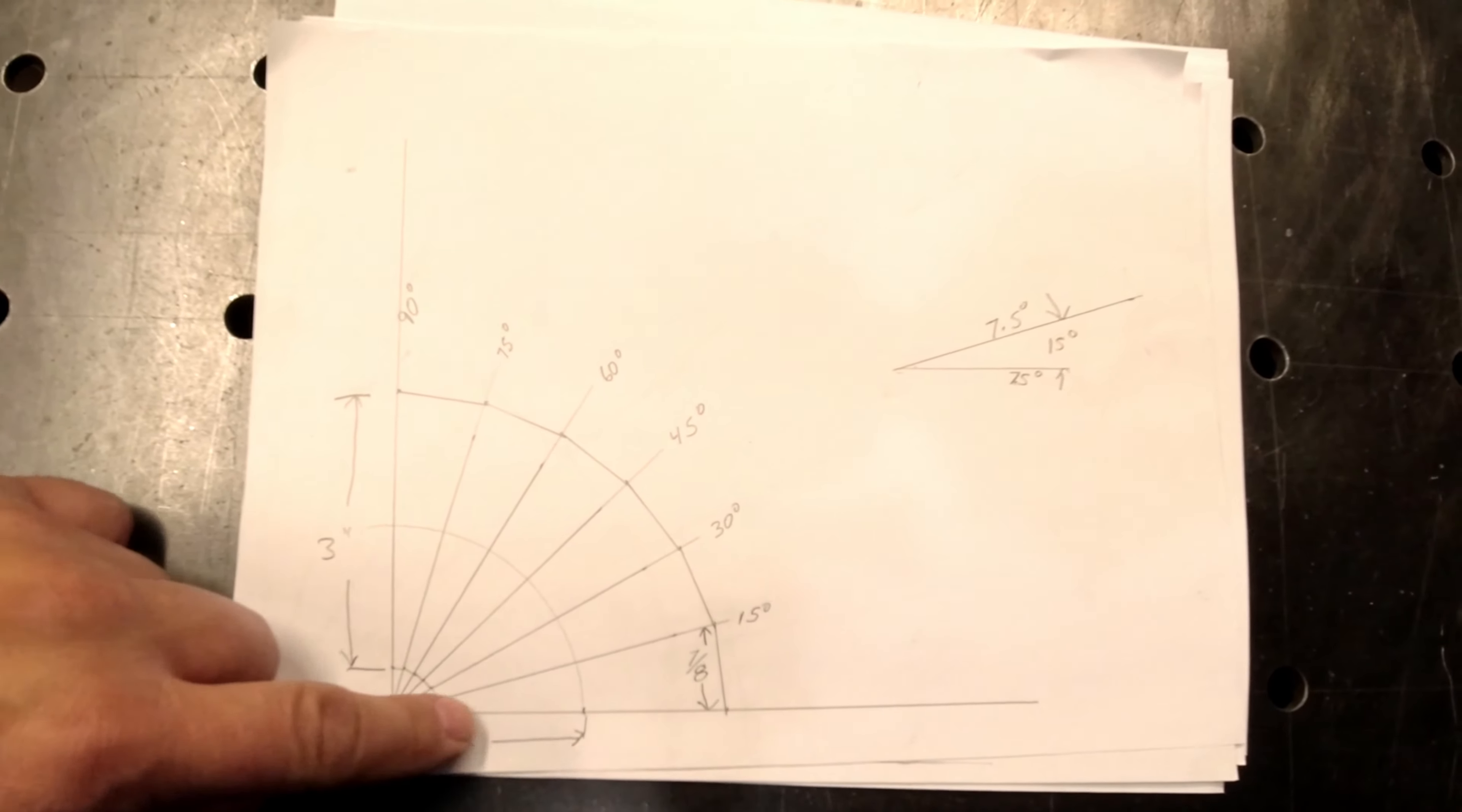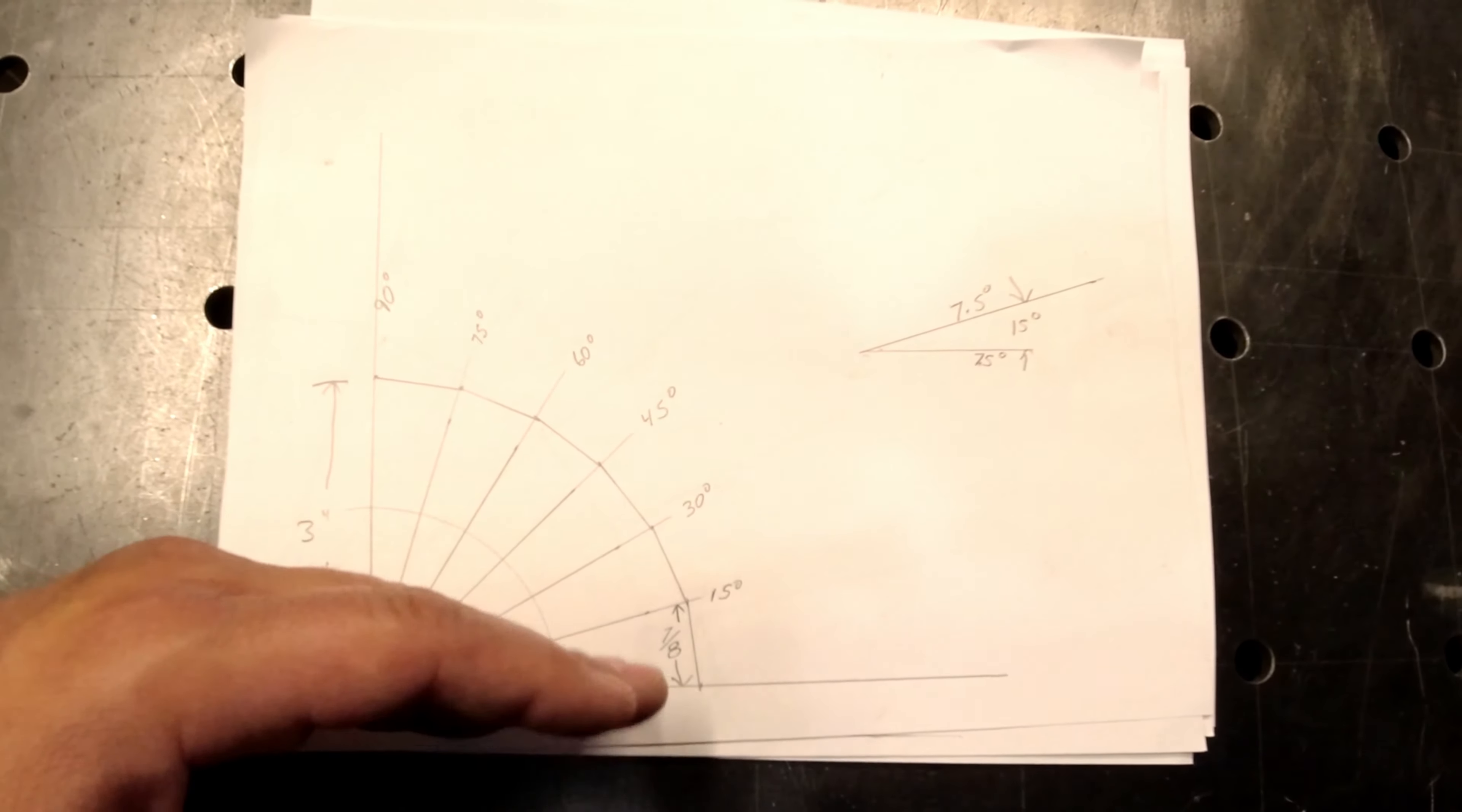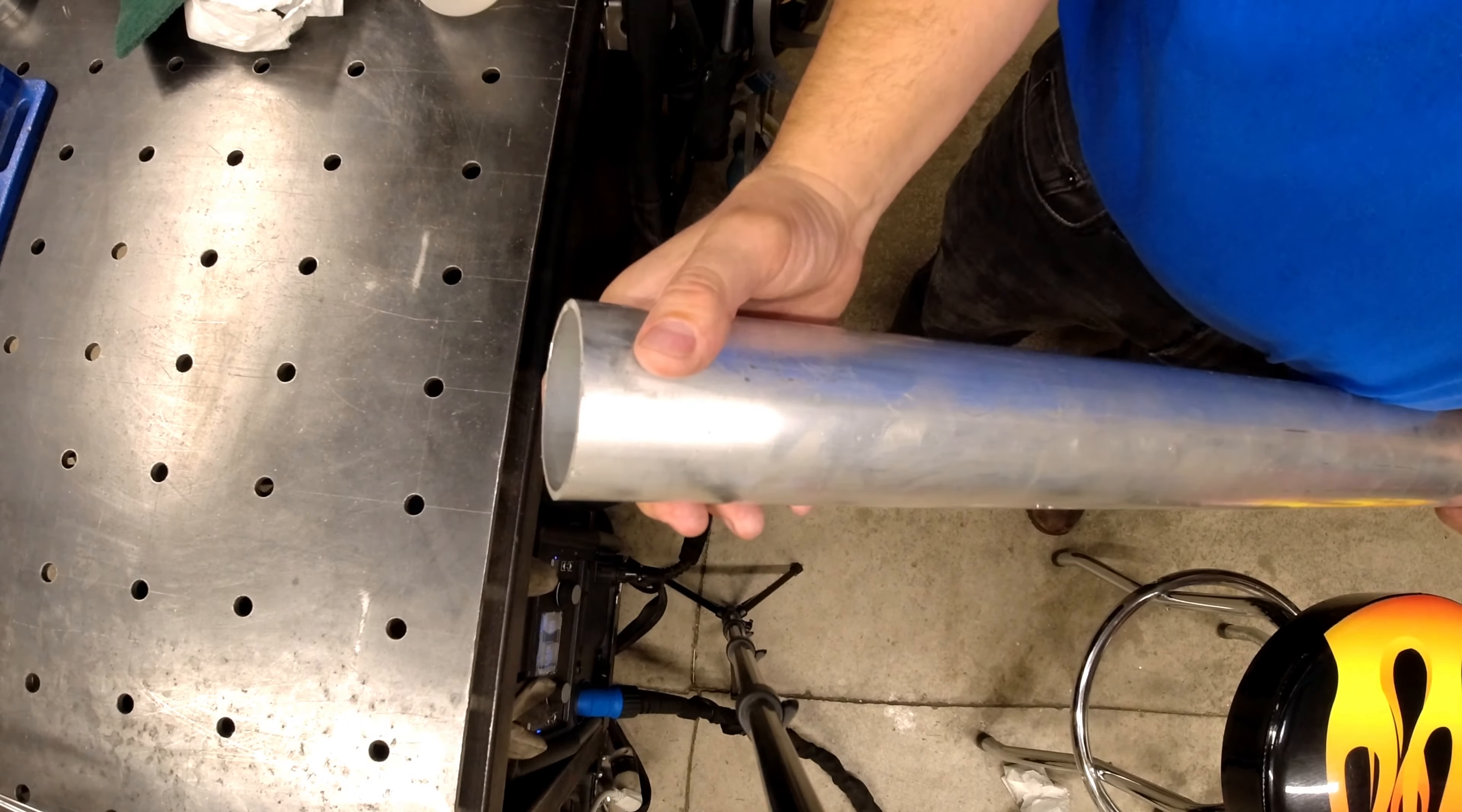Okay, in our last video we laid out this three-inch tube roughly on a two-inch center using a 15-degree pie cut. So in this video I'm going to show you how to cut these tubes and get it laid out so that you can stack these up and get a 90-degree bend just like you're looking for.